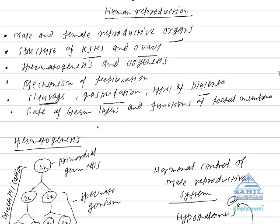During gastrulation, three germ layers are formed and the germ layer later on forms the different organs of our body. This is called fate of germ layer.